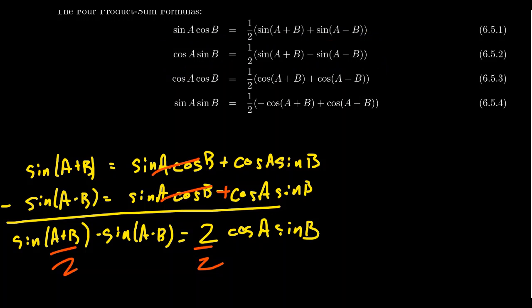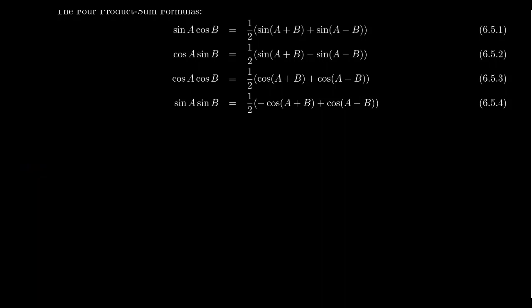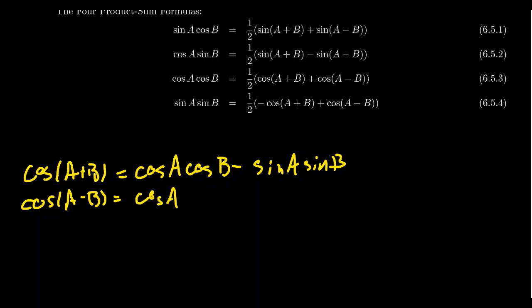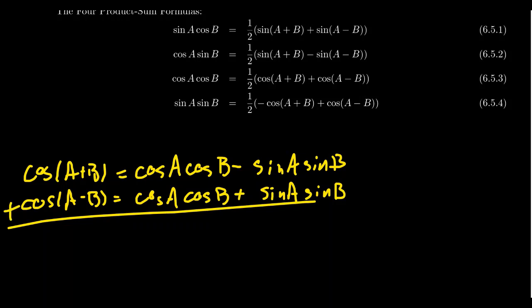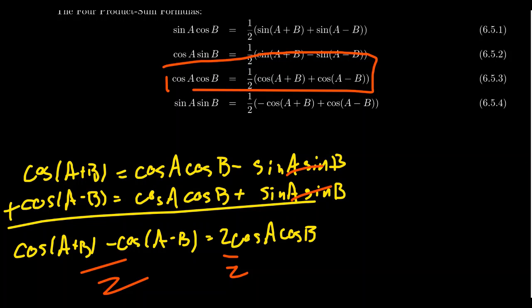The other two identities come from combining the angle sum and angle difference identities for cosine. Cosine of (A+B) equals cosine A cosine B minus sine A sine B, and cosine of (A−B) equals cosine A cosine B plus sine A sine B. Adding these together, the left-hand side gives cosine(A+B) plus cosine(A−B), the cosines double up to 2 cosine A cosine B, and the sines cancel. Dividing by 2: cosine A times cosine B equals one-half times [cosine(A+B) plus cosine(A−B)].